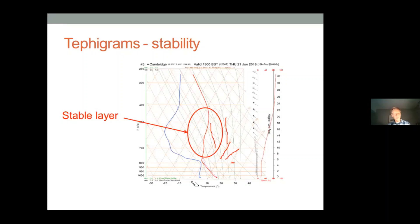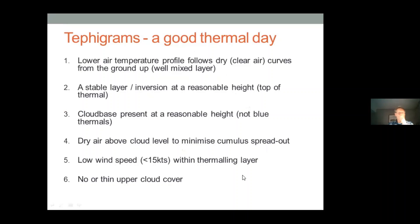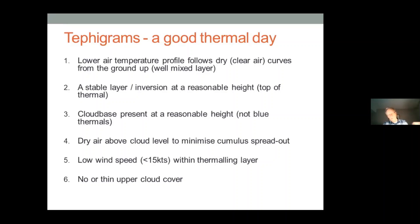For thermals, what you want is instability in the lower layer. Here's the shopping list — the recipe — six items. Number one: the lower air temperature profile follows the dry adiabatic curves from the ground up — a well-mixed layer. Number two: a stable layer or inversion at a reasonable height. Number three: cumulus cloud base at a reasonable height. Number four: dry air above the cloud to minimise spreadout. Number five: relatively low wind speed within the thermalling layer. Number six: no thin upper cloud cover — and you want this to persist throughout the day.